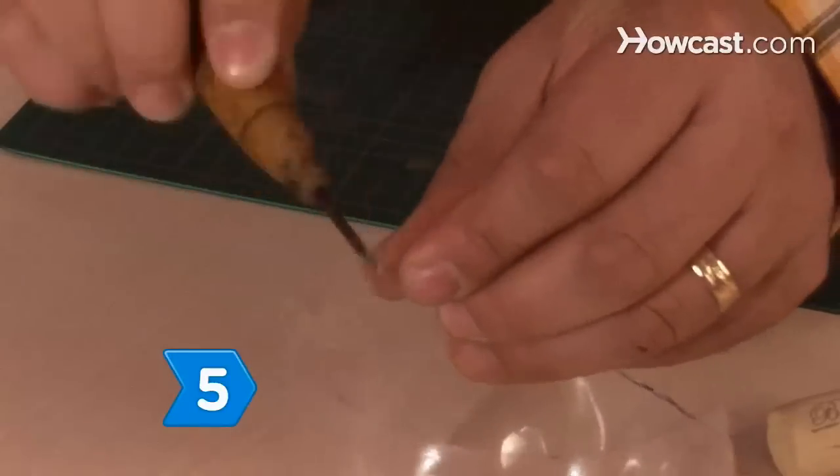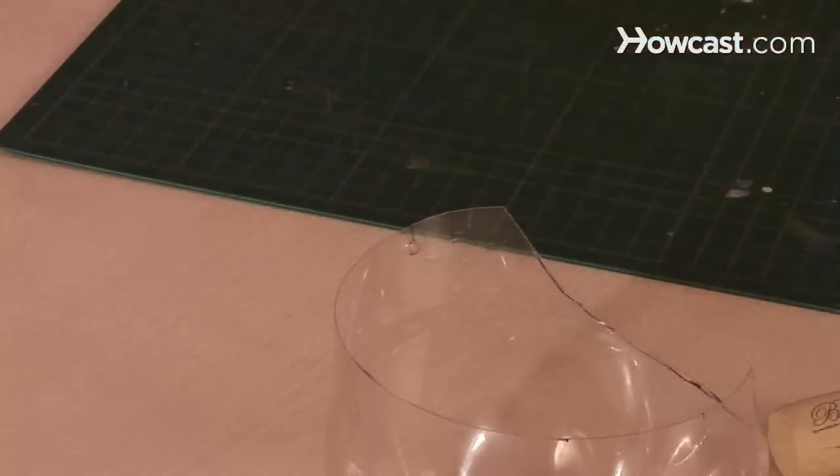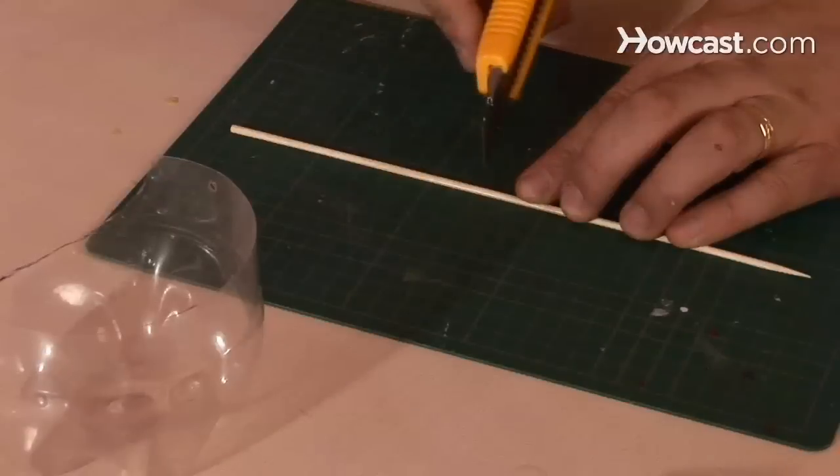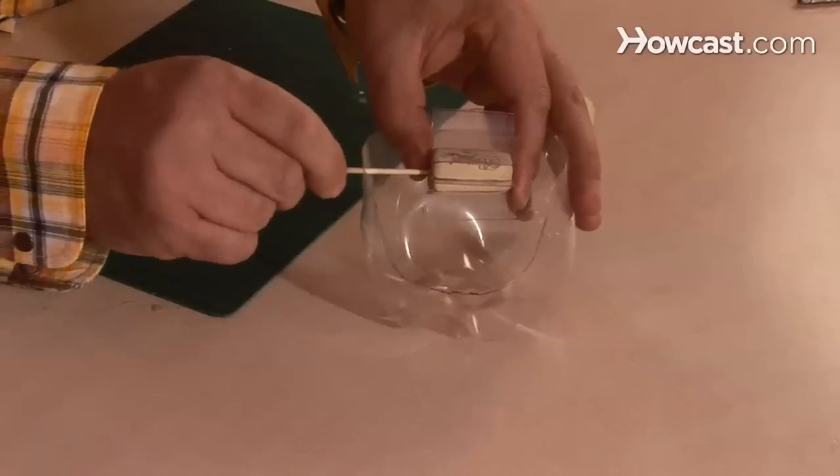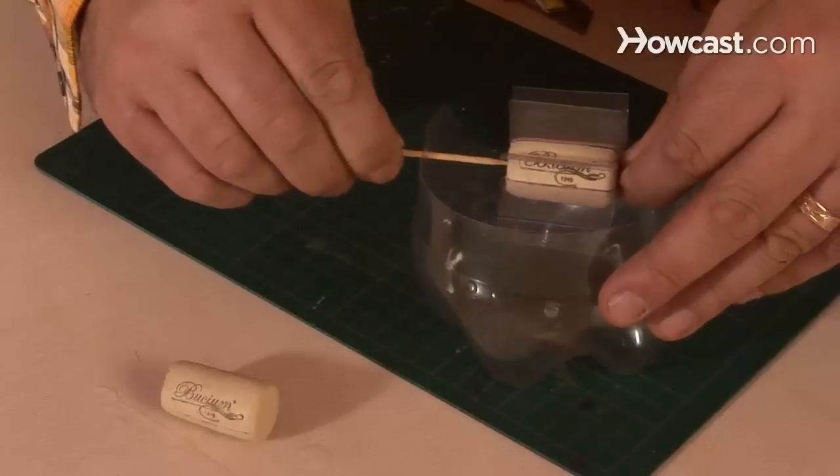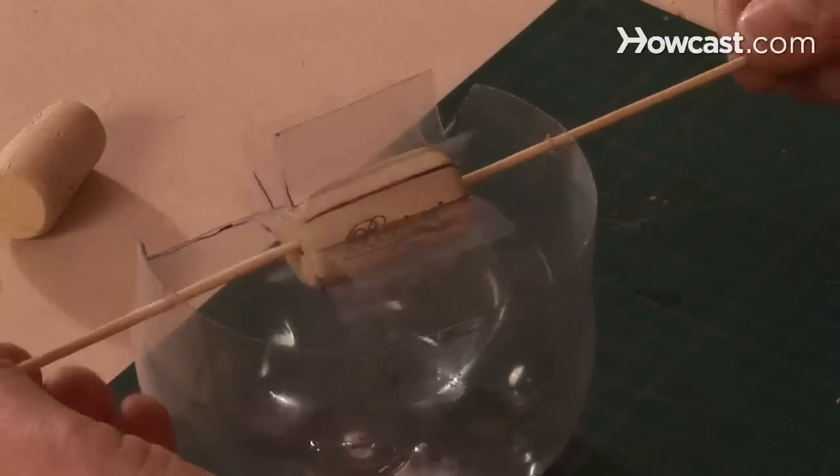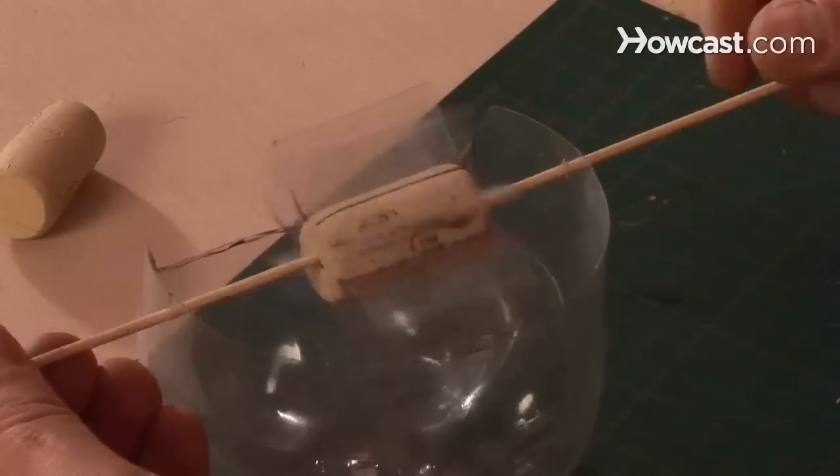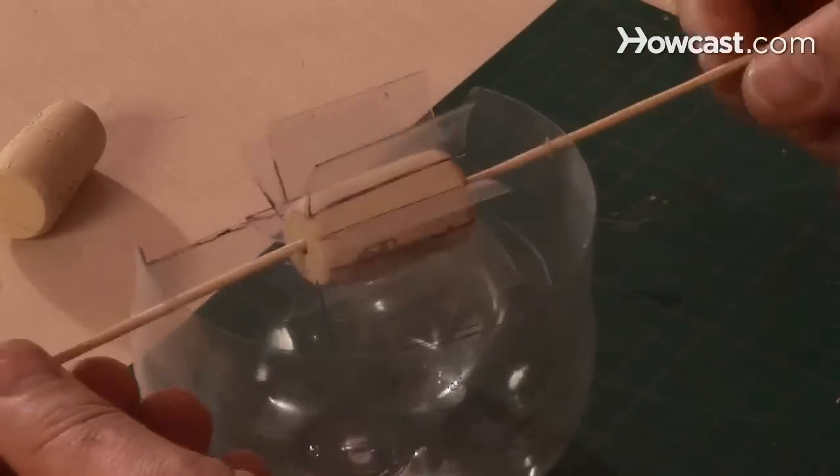Step 5. Poke two holes in opposite sides of the base, just below the rim. Then cut the skewer in half and thread each half through one of the holes and into the ends of the cork. Make sure that the skewer halves are wedged tightly into the cork and that they have room to spin in the holes in the bottle base.